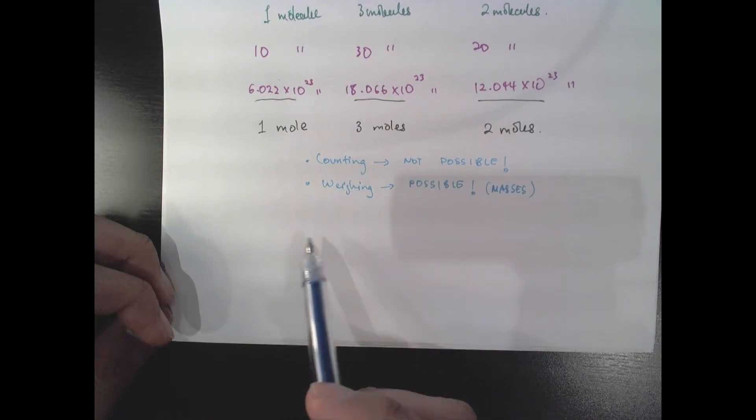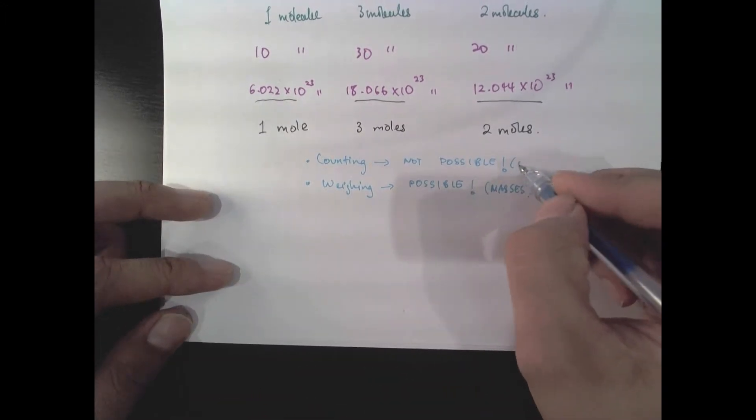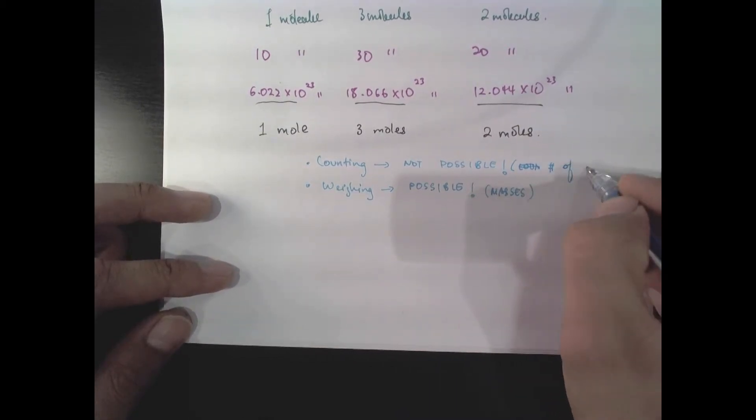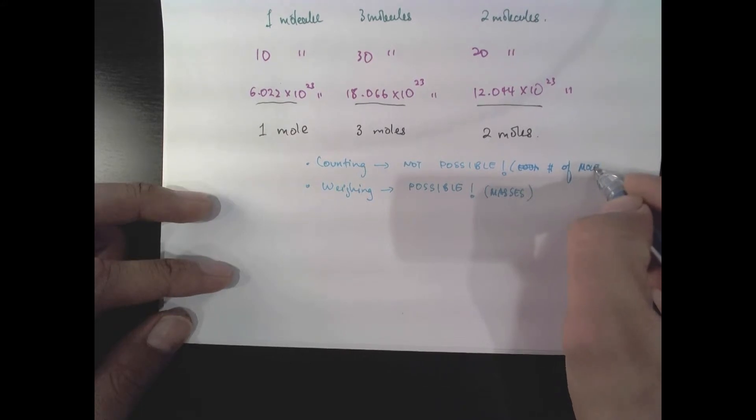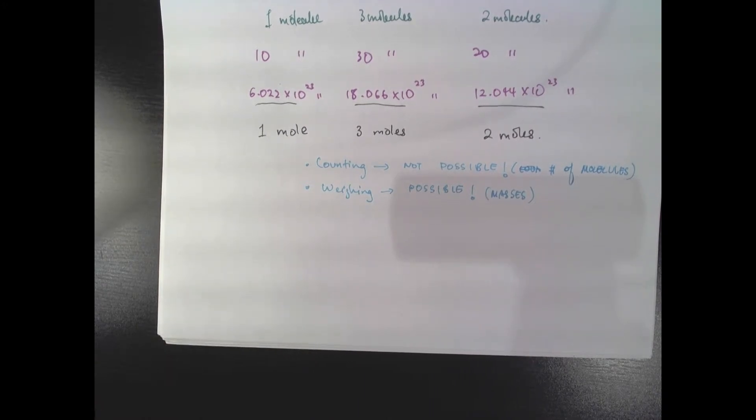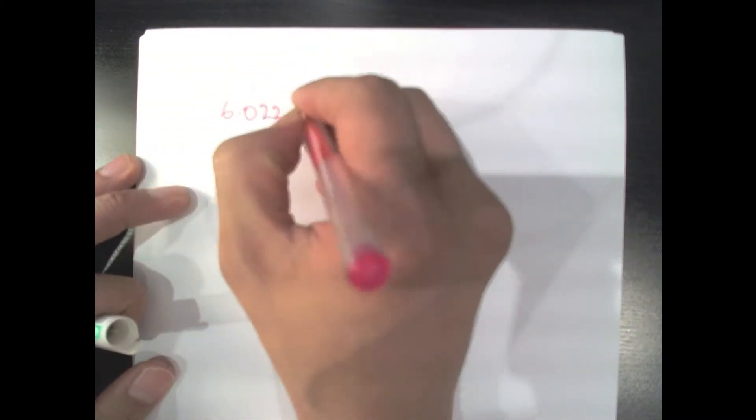So wouldn't it be nice if there was a way to convert between moles and masses easily? Then we would be able to predict our reactions based on their masses and not by counting the number of atoms, which is essentially what moles is. Moles is essentially counting the number of molecules or atoms, which we can't really do. So it turns out that there is a way and that is the reason why we've chosen this strange number.